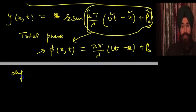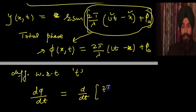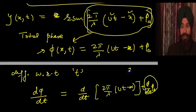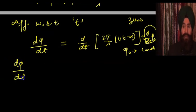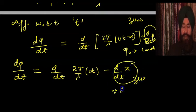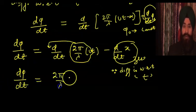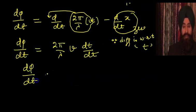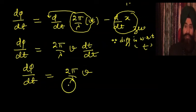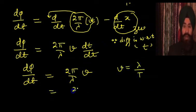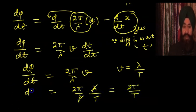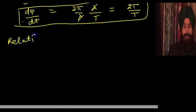Now differentiating the total phase with respect to time: dφ/dt. The differentiation of φ₀ is 0 because φ₀ is constant. The differentiation of x is also 0 because we are differentiating with respect to time. So d φ/dt = 2π/λ · v. Since v = λ/T (wave velocity), d φ/dt = 2π/T = ω. This is very important.